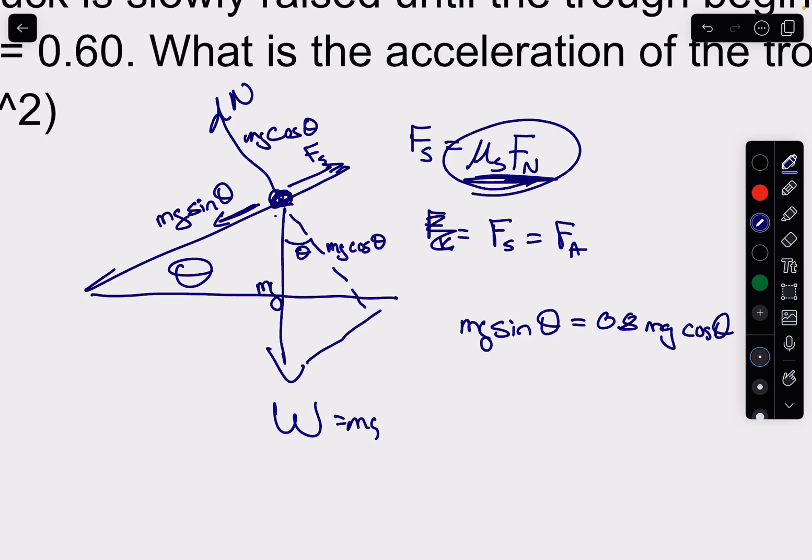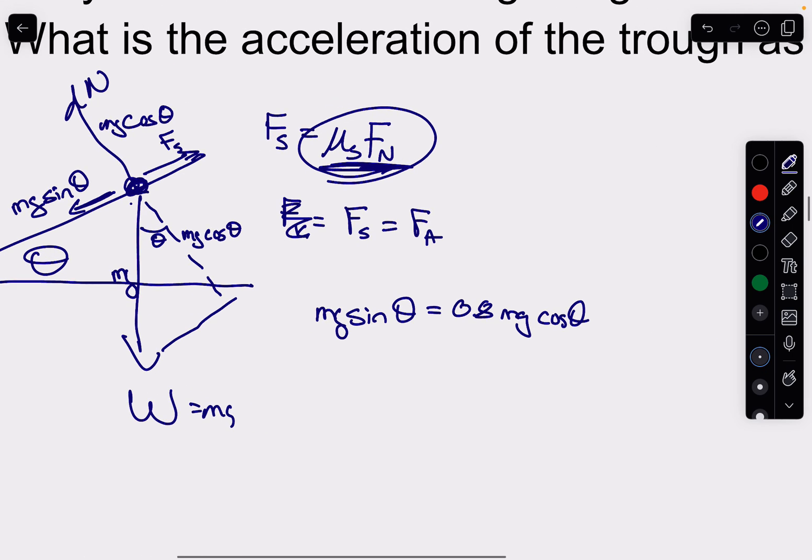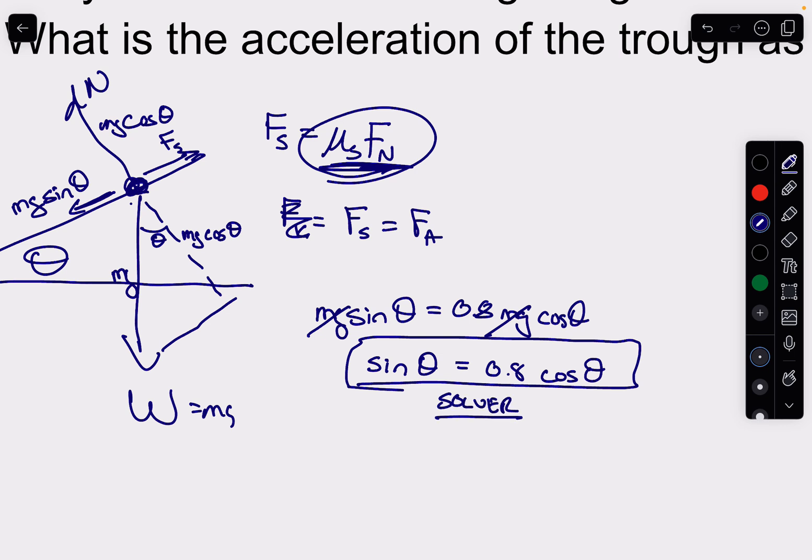Now at this point, we need to solve for theta. We don't know what the angle is, but we can calculate it. So what we can do is, well, I hope you see that the mg's cancel. By the way, if you're struggling and the mass wasn't given, you can make it up because ultimately what the problem is saying is that the m is going to cancel. And so what I can say is sin theta is 0.8 cos theta. Now at this point, we have one equation with one unknown.